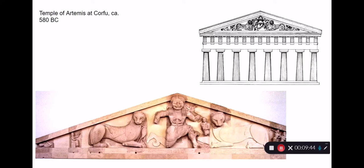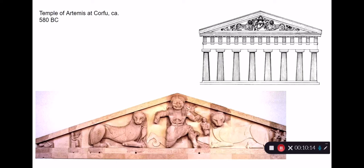I want to start with the Temple of Artemis on Corfu, an island off the western coast of Greece. This temple was built around 580 BC, dedicated to the goddess Artemis. It's pretty well gone, so this is just a picture of what the facade would have looked like. We can see immediately this is Doric — we have Doric columns with their plain capitals, the triglyph and metope pattern indicating Doric, and the very plain architrave below it, with the pediment above.